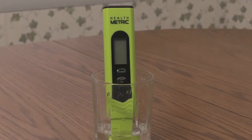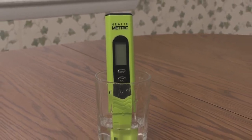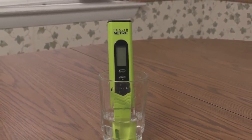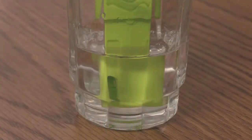If possible, soak the meter in the pH 4 calibration solution for 20 minutes before calibrating. This prepares the probe for the first at-home calibration and increases accuracy. Immerse the meter just enough to cover the sensor.